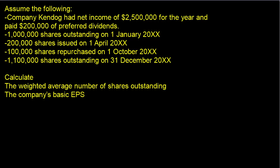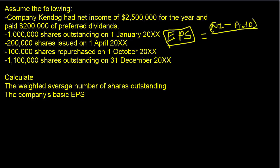This is another earnings per share calculation problem. Earnings per share is what common shareholders get as a return for the year — how much income is attributable per share of ownership. The EPS calculation involves net income minus preferred dividends, divided by the weighted average shares outstanding for the year. That's how we get EPS.